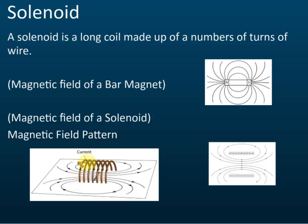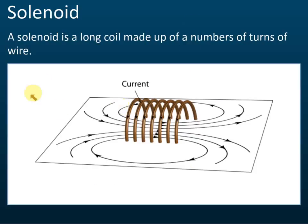A solenoid is a wire made up of a number of turns. This arrow shows the directions of the current, and the direction of the current is very important for finding the directions of the field. Because the field is similar to the field of a bar magnet, in the exam they would like you to determine the north pole and the south pole.